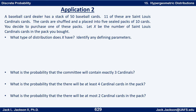Application two: A baseball card dealer has a stack of 50 baseball cards; 11 of these have St. Louis Cardinals players on them. The cards are shuffled and placed into five sealed packs of 10 cards each. You decide to purchase one of these packs. Let X be the number of St. Louis Cardinals in the pack that you bought. What type of distribution does X have and identify any defining parameters? Also, what's the probability the pack will contain exactly three Cardinals, at least four, and at most two? Go ahead and work on this now.